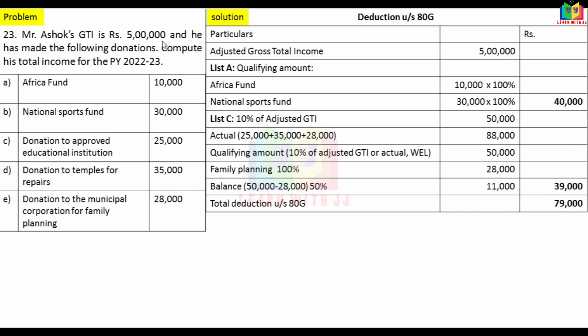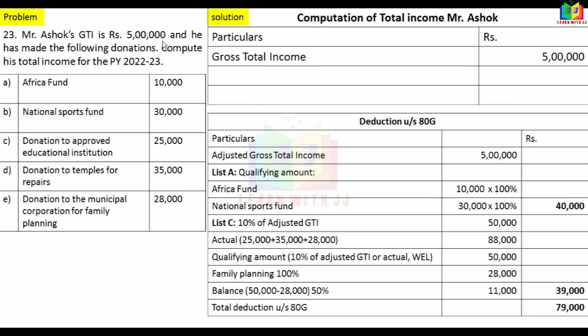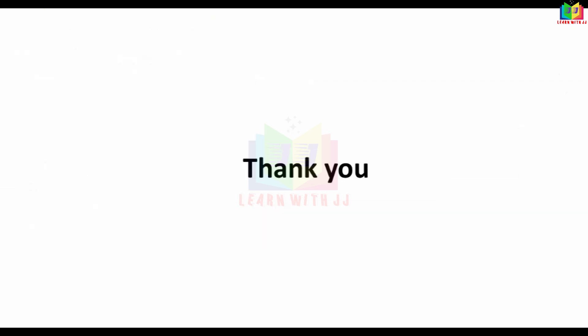Gross total income is Rs. 5,00,000. The 80G deduction is Rs. 79,000. The balance taxable income is 5,00,000 minus 79,000 equals Rs. 4,21,000. That is the taxable income. Thank you for your patient listening. Next video will cover the next problem in this chapter.